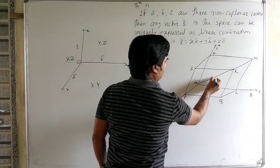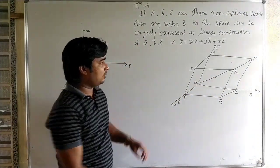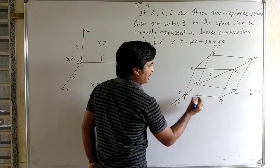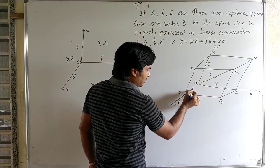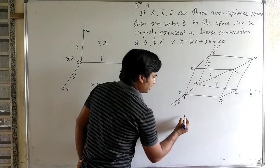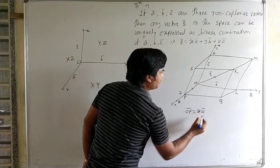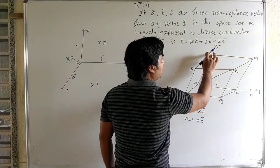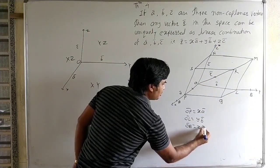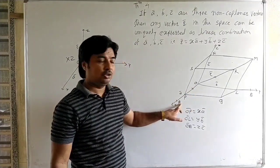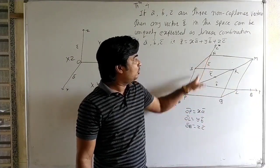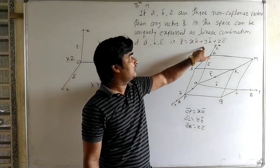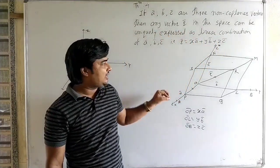Now we prove that r-bar equals x·a-bar plus y·b-bar plus z·c-bar. Here a-bar is one vector, b-bar is another vector, and c-bar is the third vector. Vector OP and vector OA are collinear, therefore we can write OP equals x·a-bar. OL and OB are collinear, so OL equals y·b-bar. Vector ON and vector OC are collinear, so ON equals z·c-bar. Since OP, OL are collinear and OL, OB are collinear, one vector is a scalar multiple of the other.